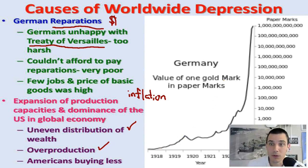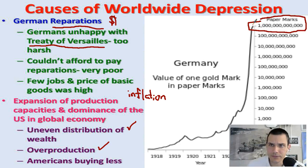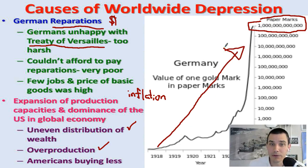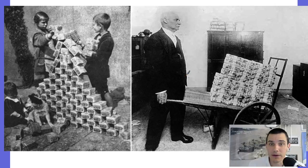By the time 1923 hits, one gold mark is equal to one billion — or perhaps one trillion — paper marks. You see this inflation going up in Germany in particular, and the value of money is going down.